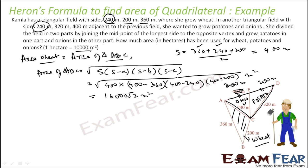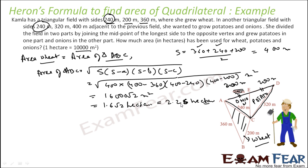Since 1,000 meter square is 1 hectare, the area is 1.6√2 hectare. Since √2 ≈ 1.41, that is approximately 1.6 × 1.41 ≈ 2.26 hectare. So the area of wheat cultivation is approximately 2.26 hectare.